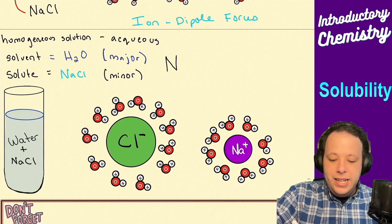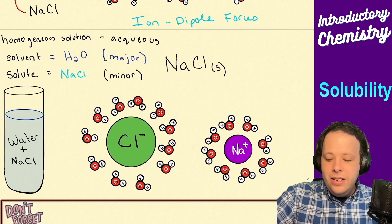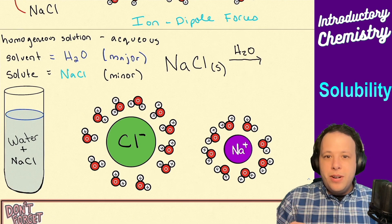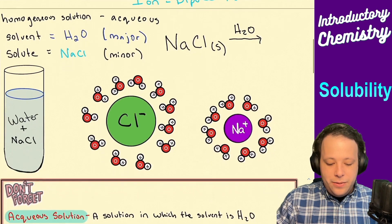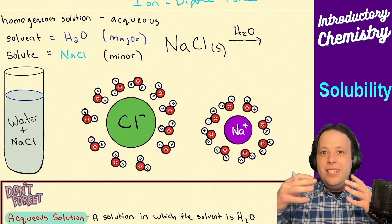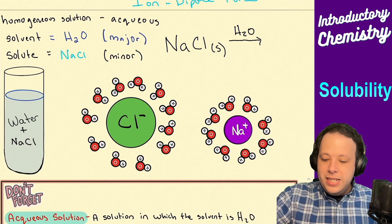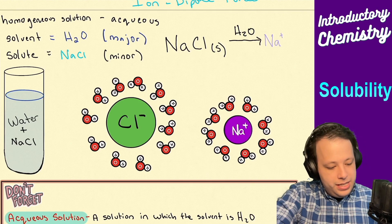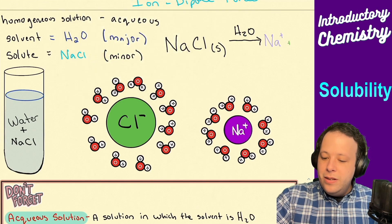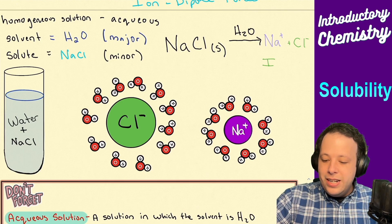We had NaCl, originally a solid, added to water. That breaks down into two ions: one Na+ and one Cl-. It gets dissociated into each of its individual pieces — Na+ and Cl-.